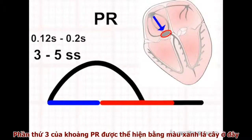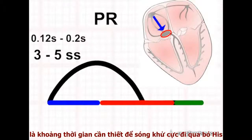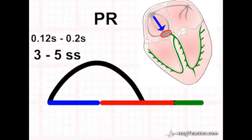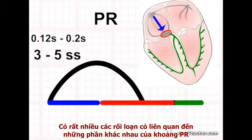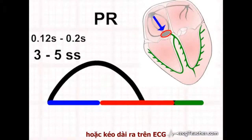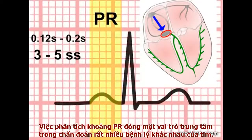The third contributor to the interval, shown here in green, is the time taken by the depolarisation wave to transit through the bundle of His and the branches of the intraventricular conducting system. Many important disorders are associated with alterations in different components of the PR interval, manifesting as abnormal shortening or prolongation of this parameter on the ECG. Analysis of the PR interval plays a central role in diagnosing many different disorders of the heart.